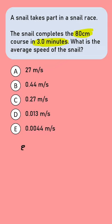Since all the options are given in meters per second, we need to make some unit conversions. 80 centimeters is 0.8 of a meter, and to convert minutes into seconds, we multiply by 60.